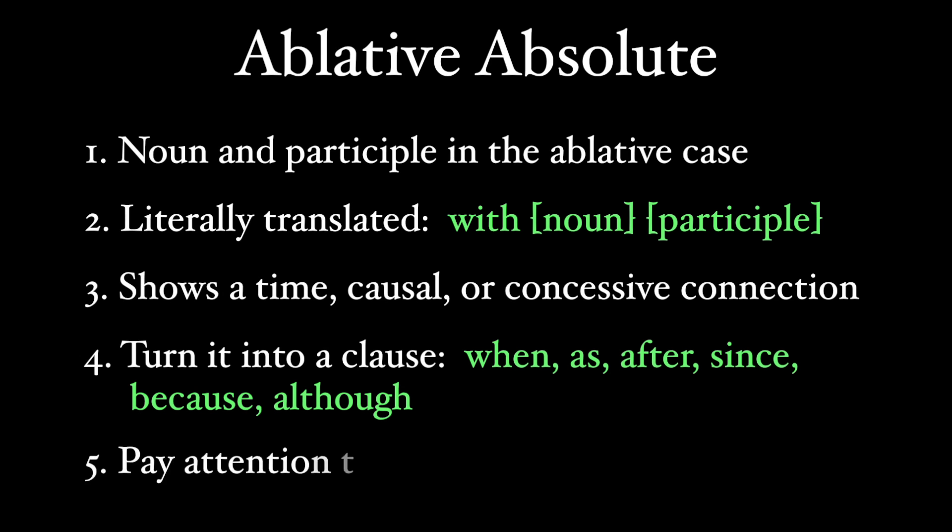Finally, pay attention to the tense of the participle in the ablative absolute. A perfect participle shows that the action is finished by the time of the main clause. A present participle shows that the action is still going on when the main clause action occurs. And a rare future participle in an ablative absolute shows an action that has yet to happen with respect to the main clause.